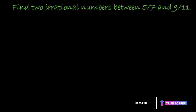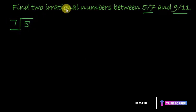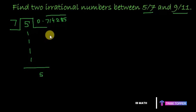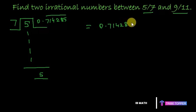Now let's check it for a fraction. I have two fractions: five by seven and nine by eleven, and we have to find two irrational numbers between them. First we express five by seven as a decimal. We start dividing five by seven and continue the division. When we come back to remainder five again, the whole thing is going to repeat. Therefore, five by seven can be expressed as zero point seven one four two eight five with a bar — it's a non-terminating repeating decimal.